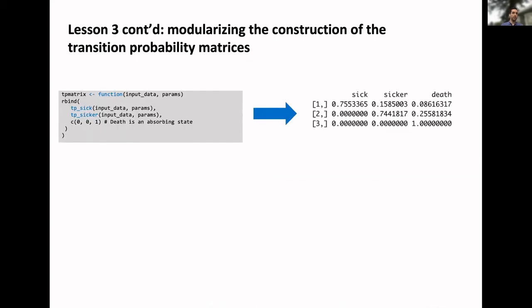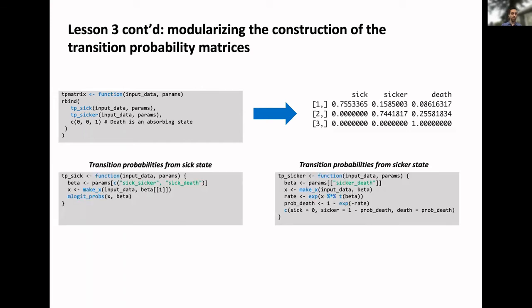Here's an example of the transition probability matrix. We have this function TP matrix. It produces the output on the right, which is just the transition probabilities. It's a really short function. Literally all it is is two sub-functions: transition probabilities from the sick state, which is probabilities from the sicker state. And what are those doing? From the sick state, it's a multinomial logit model to get the transition probabilities from the sicker state. It's the exponential rate type model. We can see there's not that many steps needed.